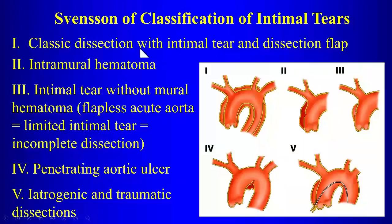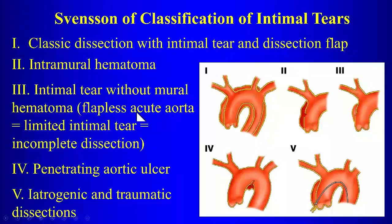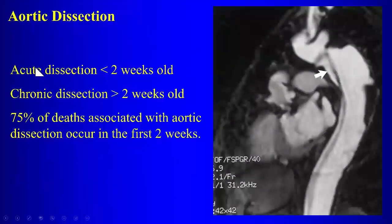The Svensson classification of intimal tears: type 1 is classic dissection with an intimal tear; type 2 is intramural hematoma, where even without a visible intimal defect, a small tear is usually present; type 3 is an intimal tear without hematoma (flapless acute aortic dissection), very hard to see on CT but visible intraoperatively; type 4 is a penetrating aortic ulcer; and type 5 is iatrogenic or traumatic dissection. Acute dissections are less than two weeks old; chronic are greater than two weeks. 75% of deaths occur in the first two weeks.